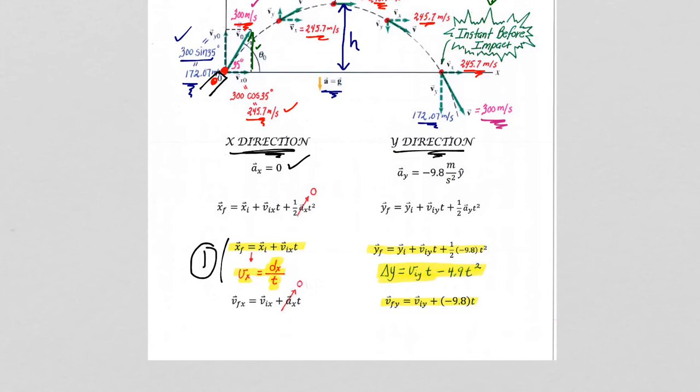So the only equation that really gives us any use is this equation here in the x direction. Basically, the speed in the x direction equals the distance in the x direction that it travels, divided by the time. So our x direction constant acceleration equations boil down to really just that one equation.